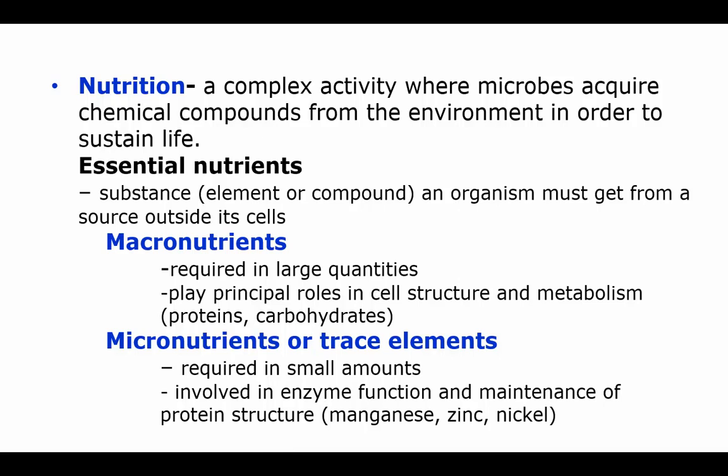We have macronutrients — macro means big, so you need these in large quantities and they play very important roles in cell structure and metabolism. We're looking mainly at carbon, hydrogen, and oxygen here. The micronutrients — micro means small — so these are called trace elements and they're required in small amounts. These are involved in enzyme function and maintaining the structure of the proteins. Manganese, zinc, nickel, and copper are all micronutrients or trace elements.